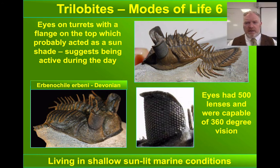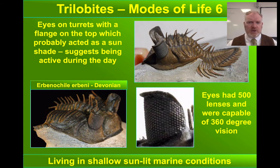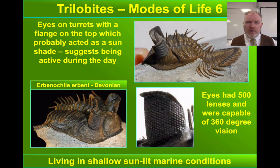This particular trilobite that David Attenborough discusses in the program is perhaps the most remarkable of all. The eyes on this animal are just astonishing — 500 lenses, with the ability to detect movement very, very accurately, and sun shades at the top providing incredible peripheral vision. They have been interpreted as living in shallow water where sunlight would have been an issue, and also to detect the wider diversity of life that would have existed in those shallow tropical seas.